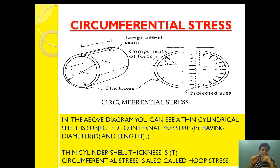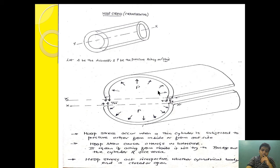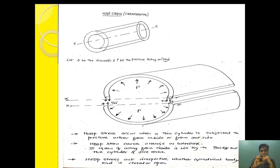This stress is also called hoop stress. Suppose this cylindrical body is cut in the XX plane, so we will get two cylindrical bodies cut from the mid. As the pressure is acting all around the circumferential plane, hoop stress will have an effect of a change in diameter. When hoop stress is acting, it will try to bulge out the system. If acting from inside, it will try to change the diameter of the system; if acting from outside, it will try to compress the system.